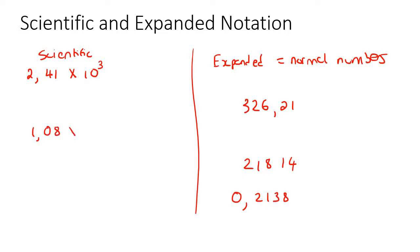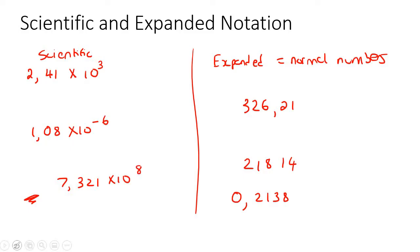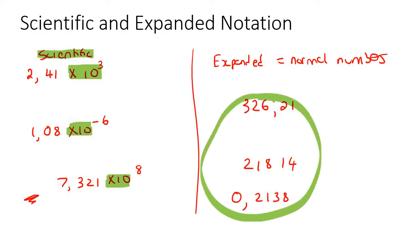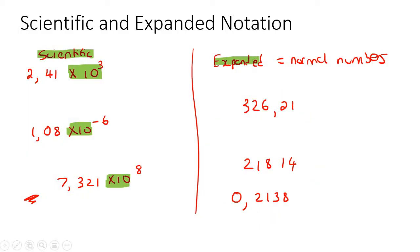For example: 1,08 times 10 to the negative 6. And then something like 7,321 times 10 to the positive 8. So whenever you see this 'times 10' part, that is called scientific notation. And when there's just a normal number, it's called expanded — just like a normal number.